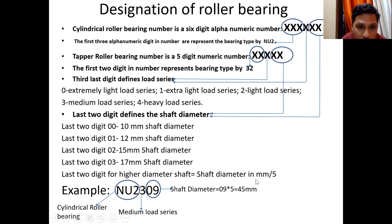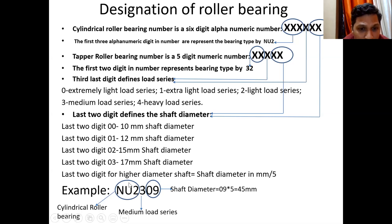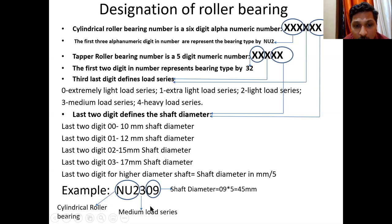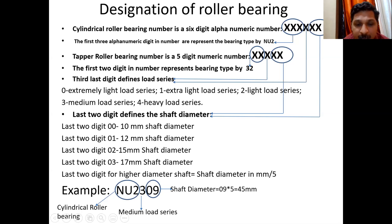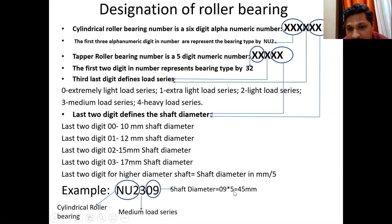For example, NU2309: NU2 defines that the bearing is a cylindrical roller bearing; 3 defines that the load is a medium load series; and the last two digits 09 define the shaft diameter as 09 × 5 = 45 mm.